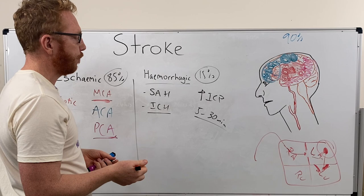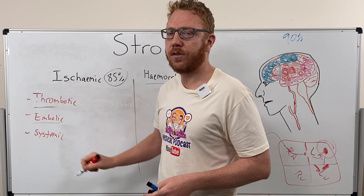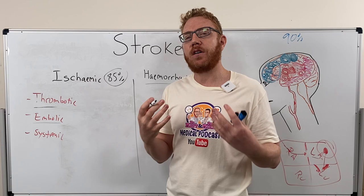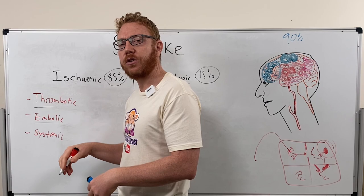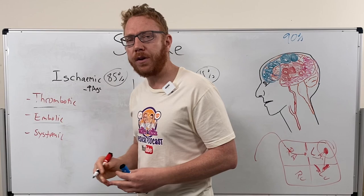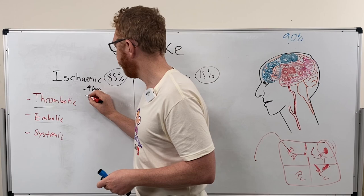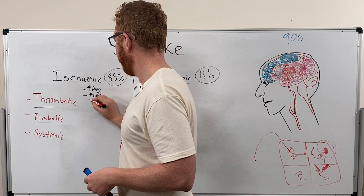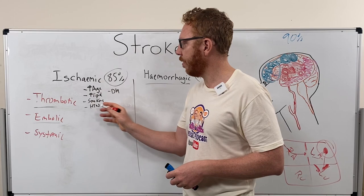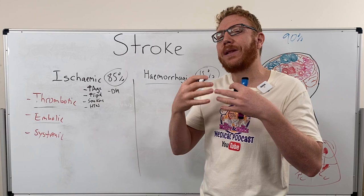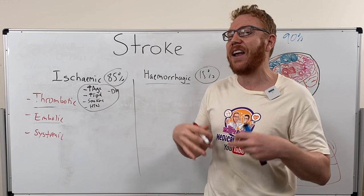Now for ischemic risk factors, starting with thrombotic causes, which usually have a basis of atherosclerosis. The common risk factors that lead to atherosclerosis — and therefore to thrombotic ischemic stroke — include increasing age, elevated blood lipids (hyperlipidemia), smoking, hypertension, and diabetes mellitus. All of these increase the likelihood of atherosclerosis and plaque formation, and are consistent risk factors for thrombotic ischemic stroke.